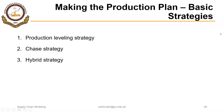Welcome again. In this segment we will start our discussion on how to develop a production plan. There are three basic strategies that we can choose from: production leveling strategy, or level strategy for short, chase strategy, and hybrid strategy. In this segment we will focus on production leveling strategy, and in the subsequent segments we will discuss chase strategy and hybrid strategy.